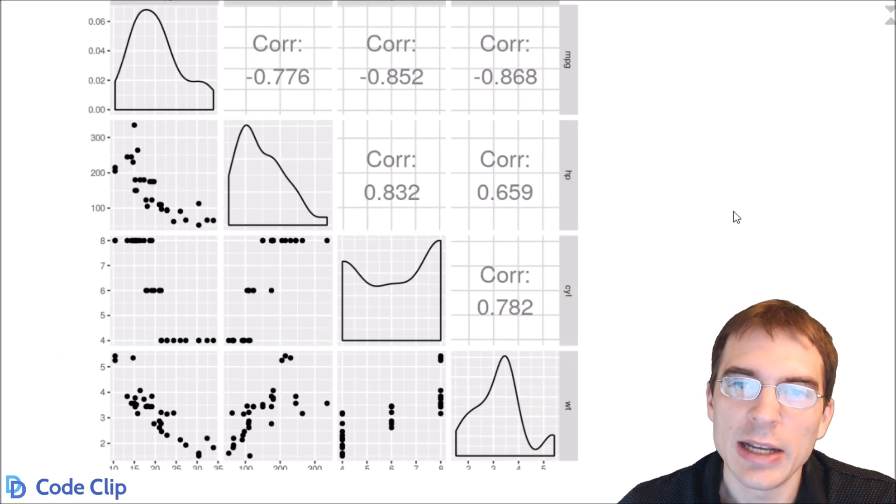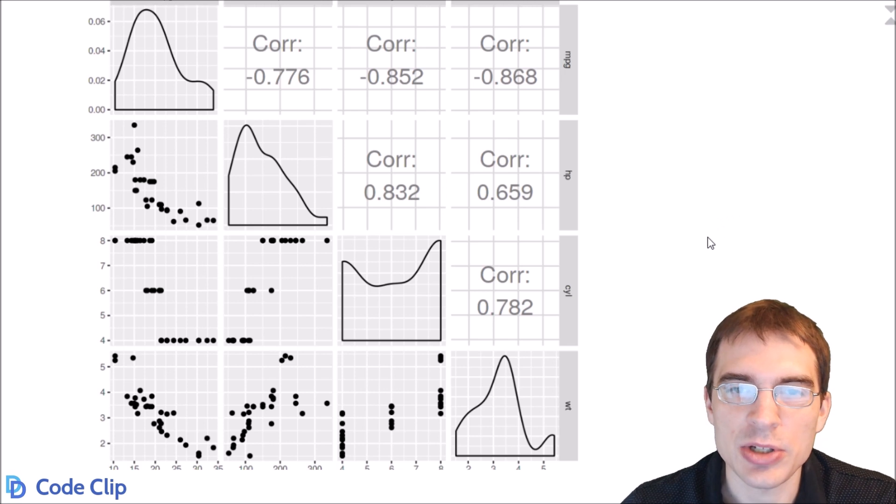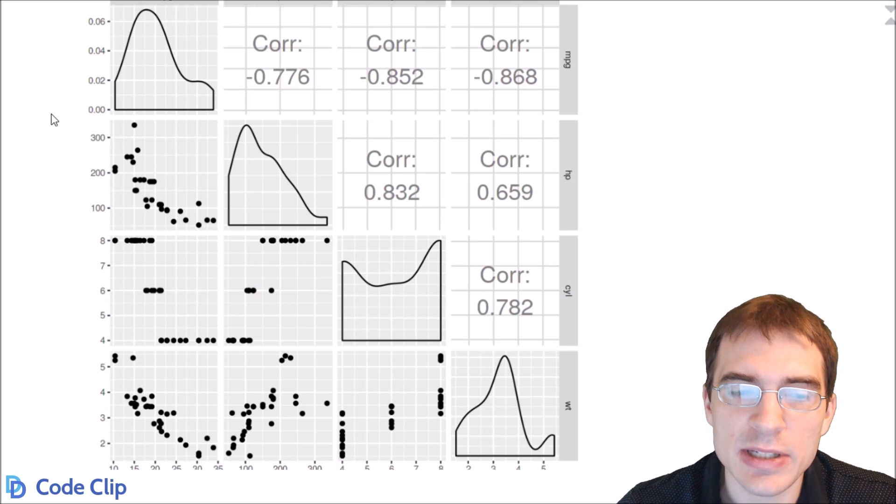So we'll run that. And you can see that the scatterplot matrix created with ggally has a little bit more going on with it. We have the scatterplots in the bottom part of the matrix here, just like we did in the first one.